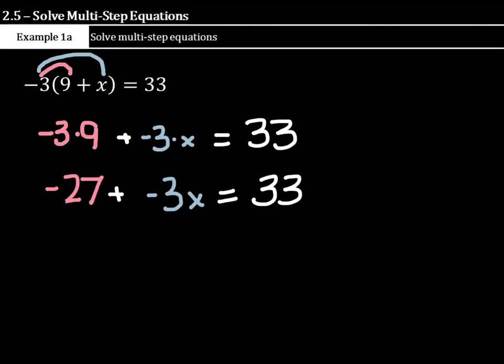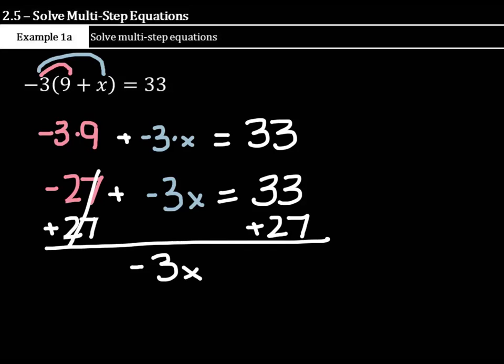Now we have it down to a two-step equation. We need to find the value of this x. So we need to first move this negative 27 to the other side of the equation. And the way we're going to do this, what is the opposite of negative 27? Well, it's a positive 27. So let's add 27 to both sides of the equation. That cancels out.